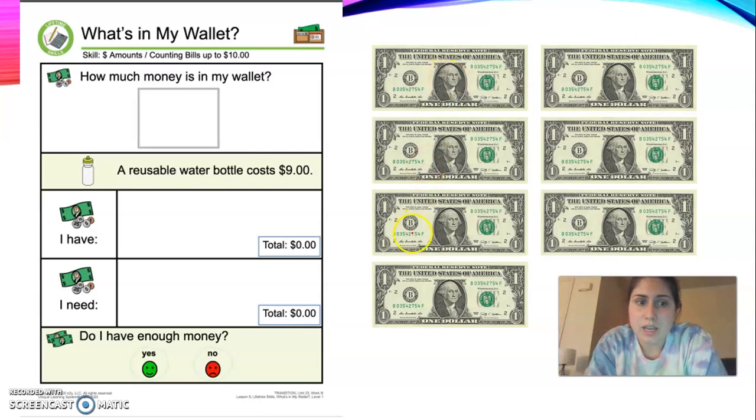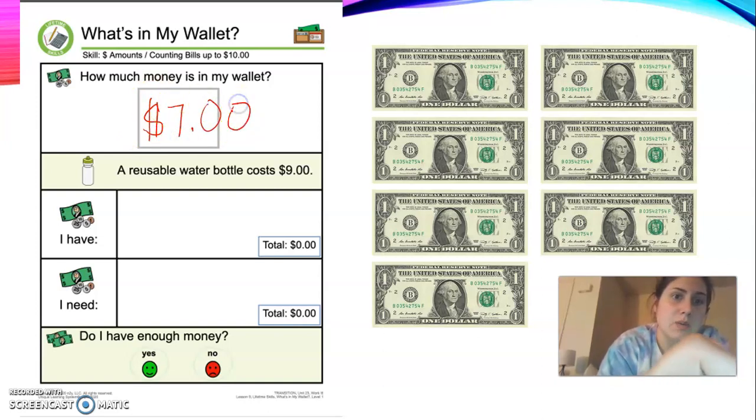One, two, three, four, five, six, seven. So we have seven dollars. We're going to write that up in the box that asks us for how much money we have in our wallet.